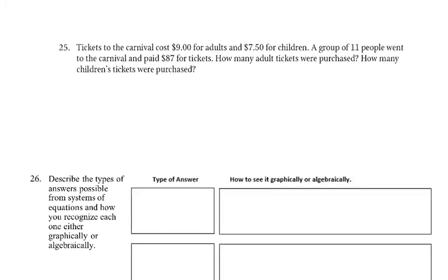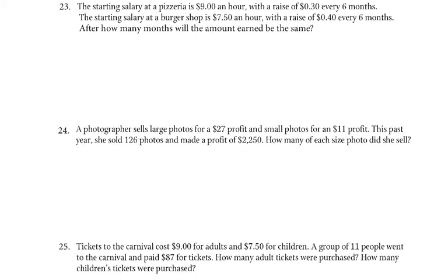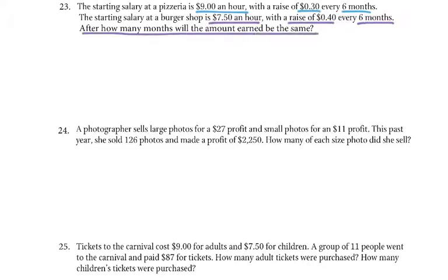Now these last three — we already did one on the other video. So once again, we can solve by graphing, by elimination, or by substitution. It doesn't really matter. Let's see how we make our equations. The starting salary at a pizzeria is $9 an hour with a raise of 30 cents every 6 months. The starting salary at a burger shop is $7.50 an hour with a raise of 40 cents every 6 months. After how many months would the amount be the same? Let's make some tables.